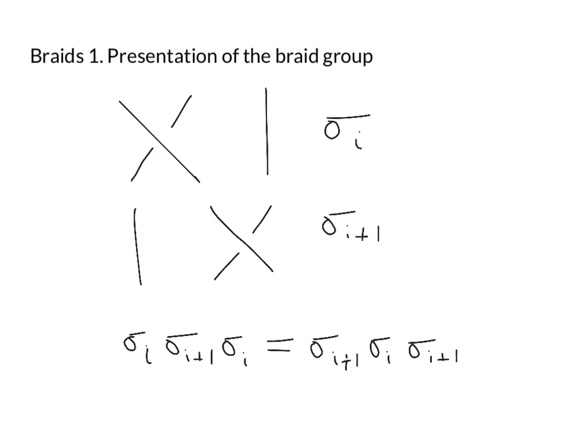So you can draw a picture of that and convince yourself that it's true. I'm not going to do it now, but this gives us in fact a complete presentation of the braid group. So we have generators sigma_1 up to sigma_k. If they're sufficiently far apart they commute, so that's when |i - j| ≥ 2. And if j is i plus one, then we have instead this braid relation.